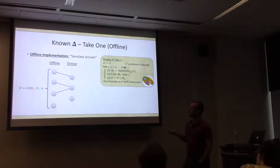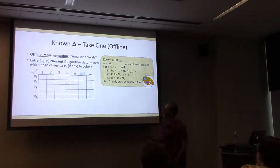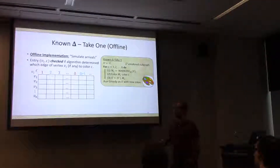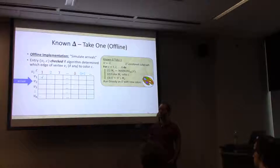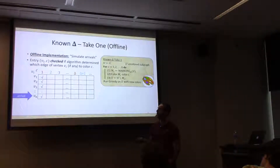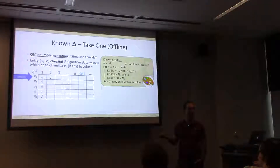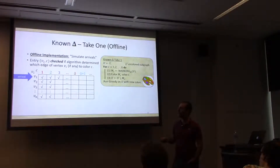What we really want is to go row by row rather than column by column. When a vertex arrives, we decide which of its edges to color with which color. The online implementation does exactly what you'd imagine: the first node shows up, we decide which edge to color red; the second node shows up, using another instance of Marking, we decide which edge to color green; and so on.